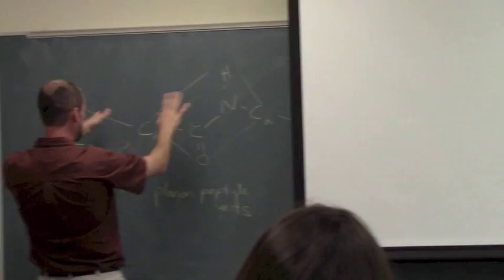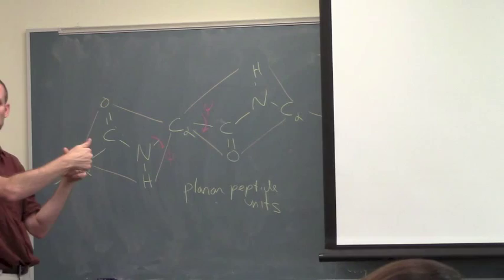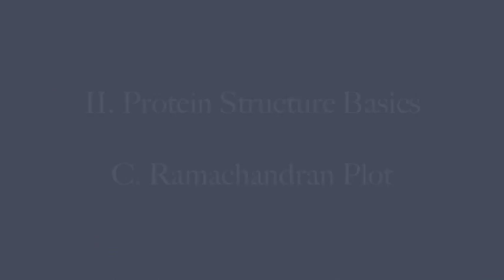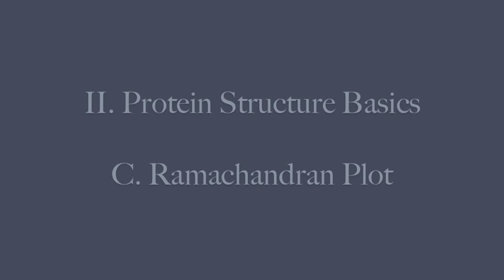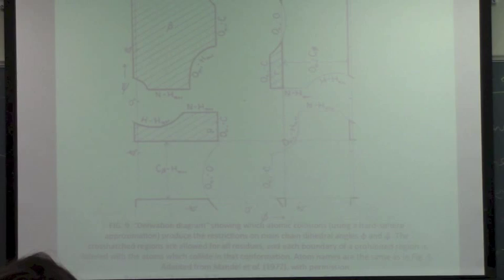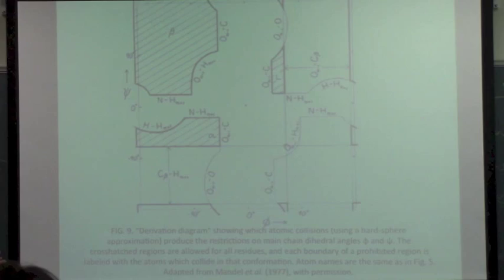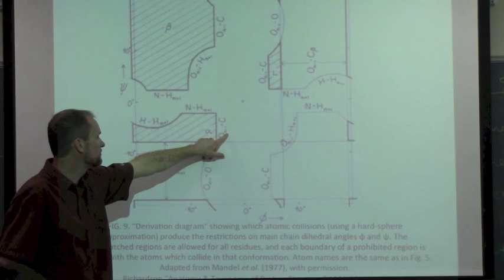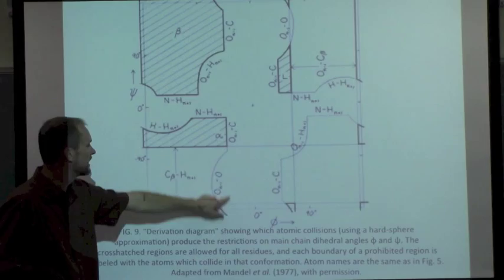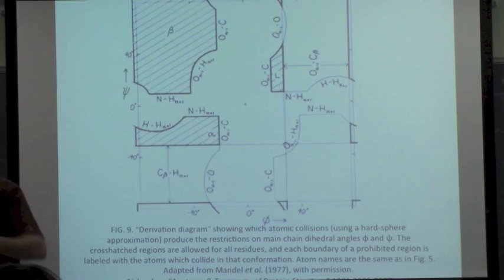As you twist these around, the problem is at certain twists, these atoms are going to bump into each other and they're not going to work. You're not going to be able to put these angles together. That's one of the first lessons of protein folding - we start to move these angles around, things clash, and they just don't fit together, even with just the backbone, regardless of the side chains.